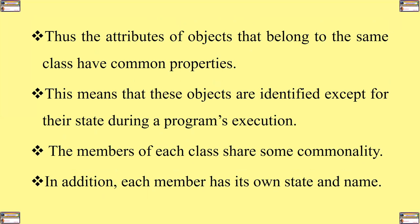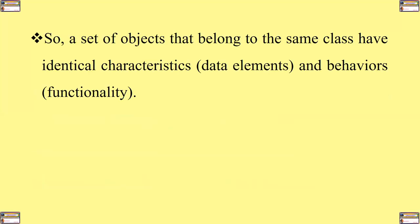The members of each class share sub-communality. In addition, each member has its own state and name. Therefore, a set of objects that belong to the same class have identical characteristics or data elements and behaviors, or what we call functionality.